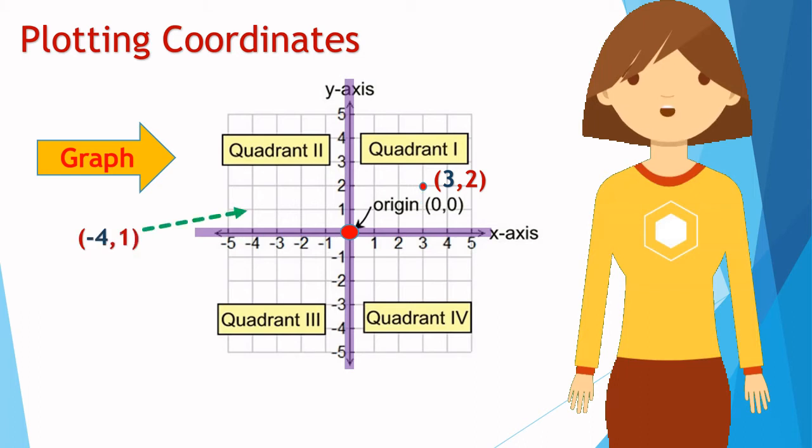Similarly, this coordinate can be plotted at this point because minus 4 relates to x and 1 relates to y-axis.